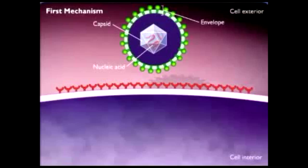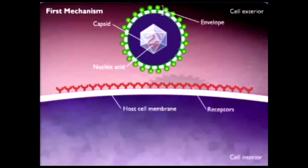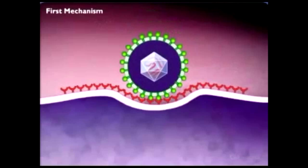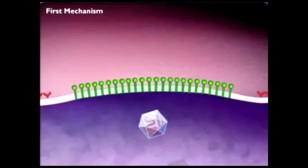There are two mechanisms by which enveloped viruses enter host cells. In the first mechanism, the virion attaches to host cell receptors by specific surface proteins called spikes. The envelope of the virus fuses with the plasma membrane of the host, and the nucleocapsid is released directly into the cytoplasm. The nucleic acid then separates from the protein coat.